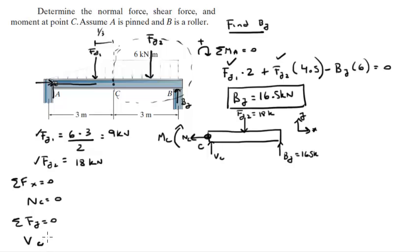So the shear plus By minus Fy2 equals 0. We know By, we know Fy2, so when we solve for BC, we get that the shear equals 1.5 kilonewtons. This is the normal.